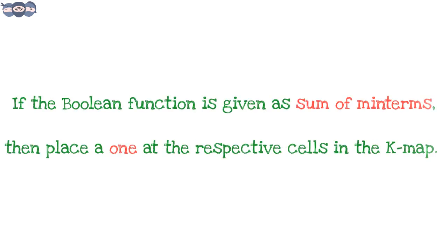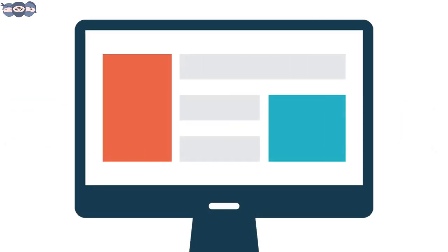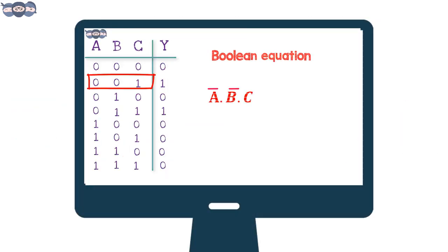The second step: if the Boolean function is given as sum of minterms, then place a 1 at the respective cells in the kmap. Now, in the previous video, we have already seen what is a minterm and sum of products. If you need any revision with it, please find the links of the video in the description below.